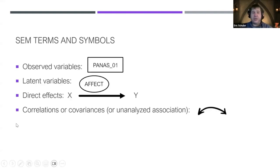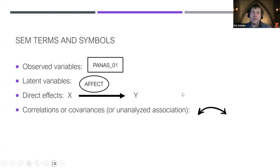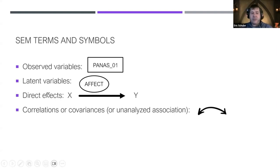In terms of notation: a square box represents an observed item — like someone's score on a PCL-5 or depression inventory. Circles represent latent variables — the construct we're hoping to measure. Single-headed arrows represent direct effects of X on Y, and double-headed arrows represent covariances or correlations.